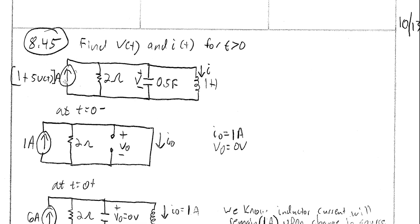We have a current source given by 1 plus 5·u(t) amps. Before t equals zero it will be a one amp source, and right at t equals zero it switches from one amp to a six amp source. In parallel with that we have a two ohm resistor, a 0.5 farad capacitor, and a one Henry inductor. Our voltage reference is the voltage across the capacitor — all components are in parallel — and our current reference is the current through the one Henry inductor.